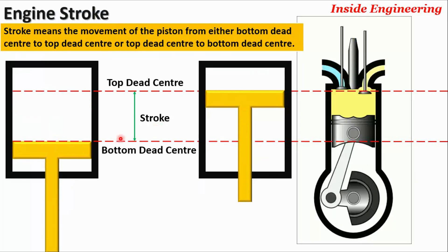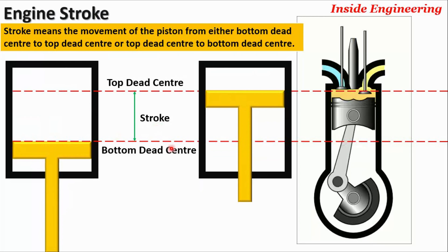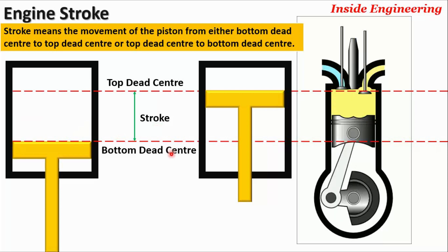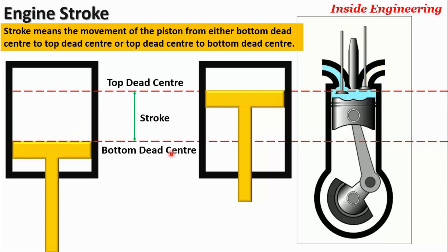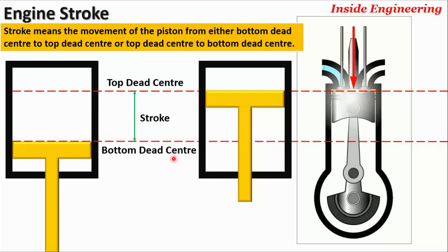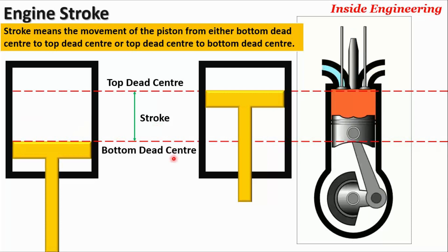Now you may have the question: on what basis are these engines differentiated into two-stroke or four-stroke? Engine type segregation is based on how many piston strokes it takes to complete one engine cycle.